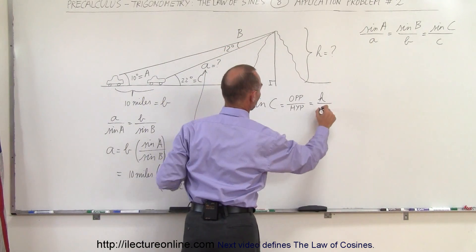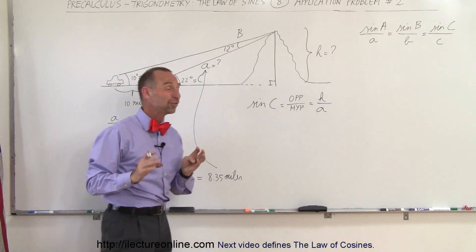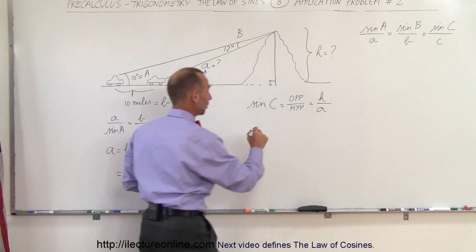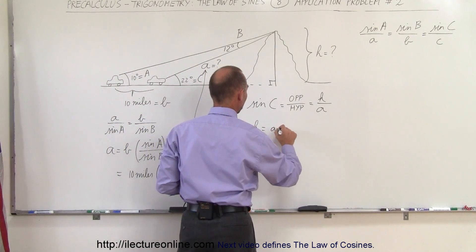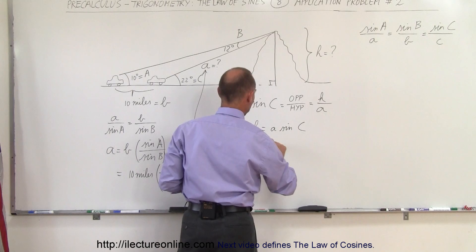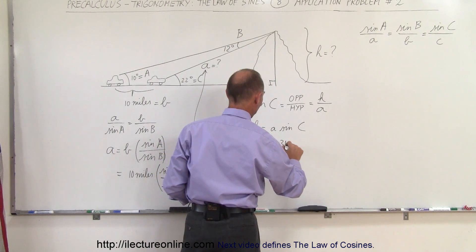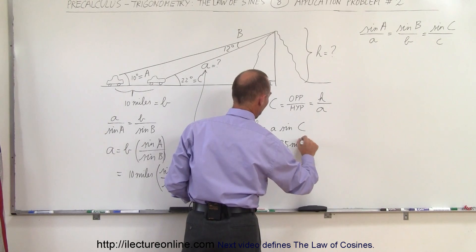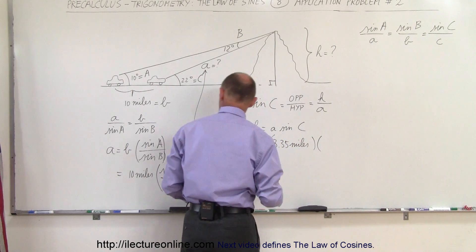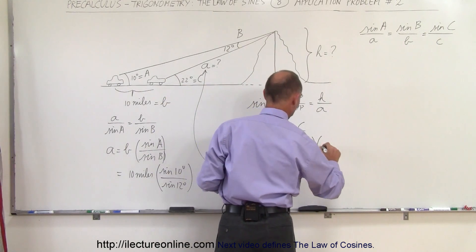In this case, the opposite side would be H and the hypotenuse is A, which is now known. We can use that to solve for H. H equals A times sine of C. A is 8.35 miles, and we multiply times sine of 22 degrees.